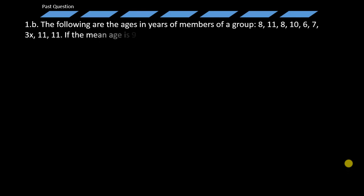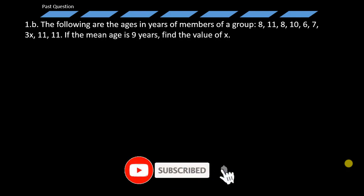Now the question goes this way: The following are the ages in years of members of a group: 8, 11, 8, 10, 6, 7, 3X, 11, and 11. If the mean age is 9 years, find the value of X.